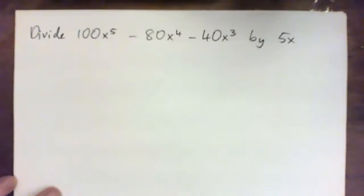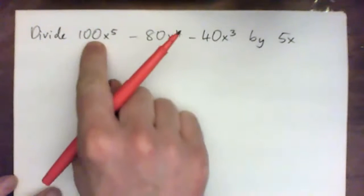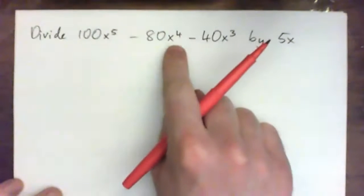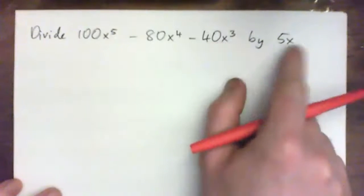Okay, so everybody watching at home, we've got to divide 100x to the 5 minus 80x to the power of 4 minus 40x cubed by 5x.